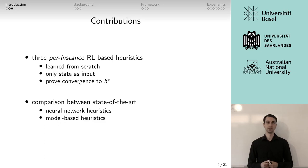The contribution of our paper is twofold. Firstly, we present three new approaches for training per-instance heuristics, and where it is not obvious, we also prove that they converge to A star.